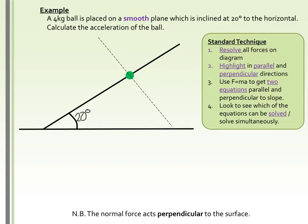We'll use that knowledge to approach our first example, which is a 4kg green ball on an inclined plane, with the incline at 20 degrees relative to the horizontal. As with examples on a flat horizontal surface, we start by drawing all of the forces acting on the particle. It's a 4kg ball so we have a downward force due to weight: 4g newtons acting downwards. We also have a normal force acting 90 degrees to the surface.